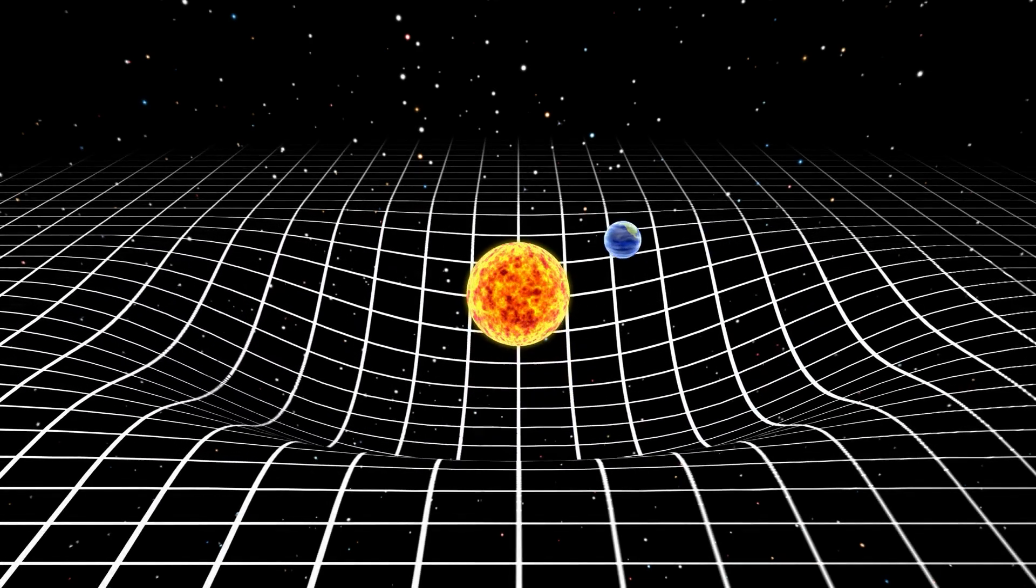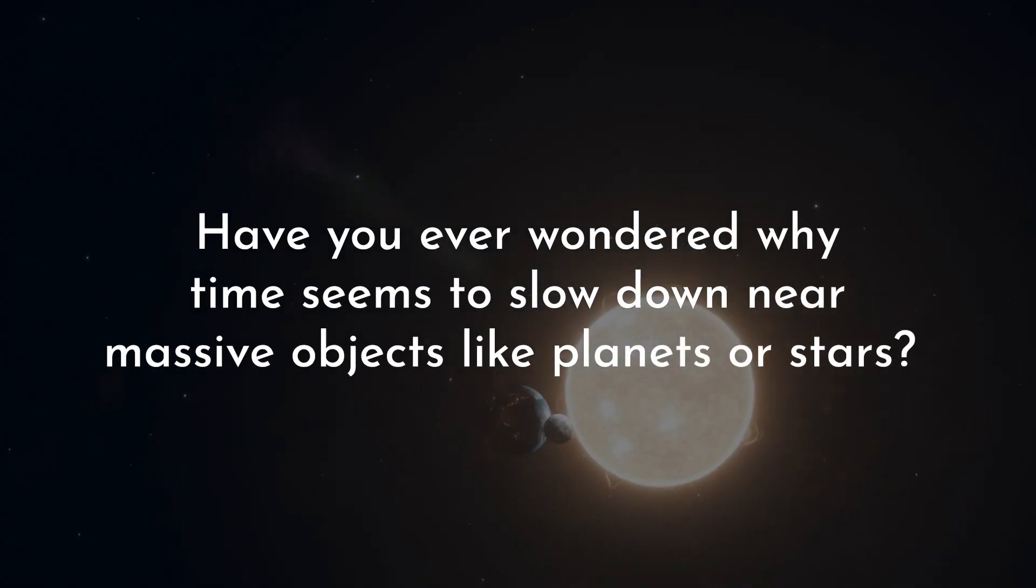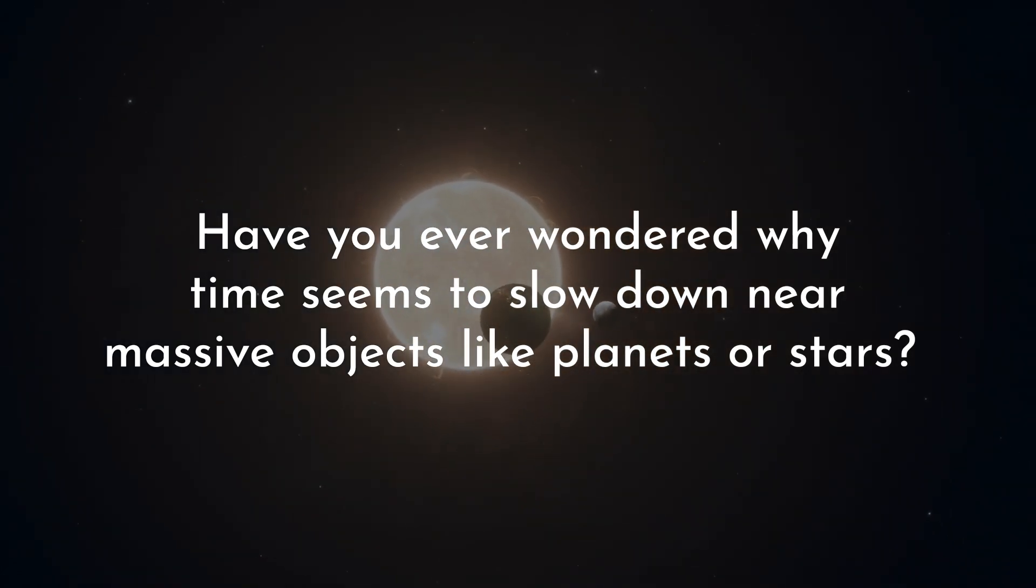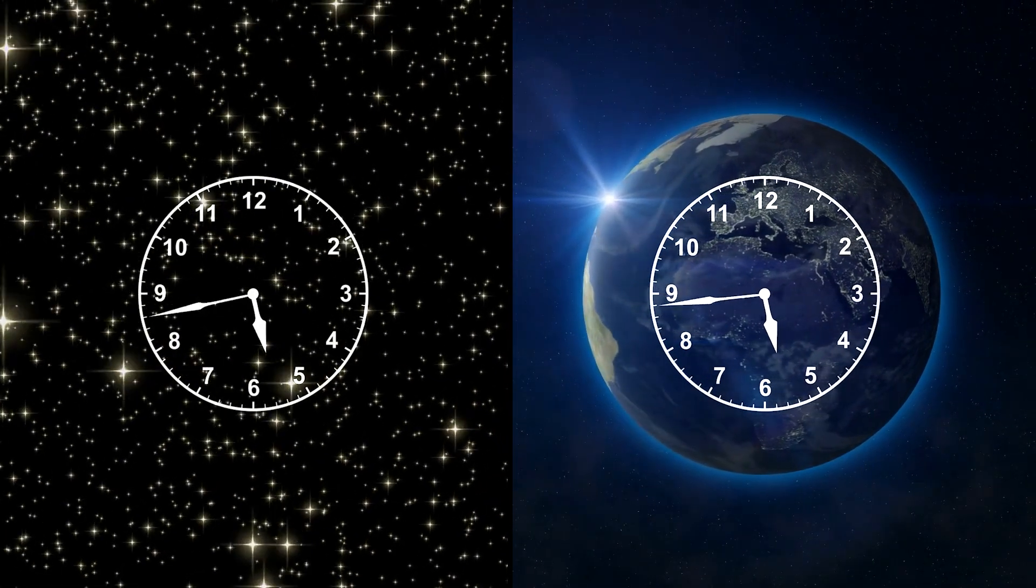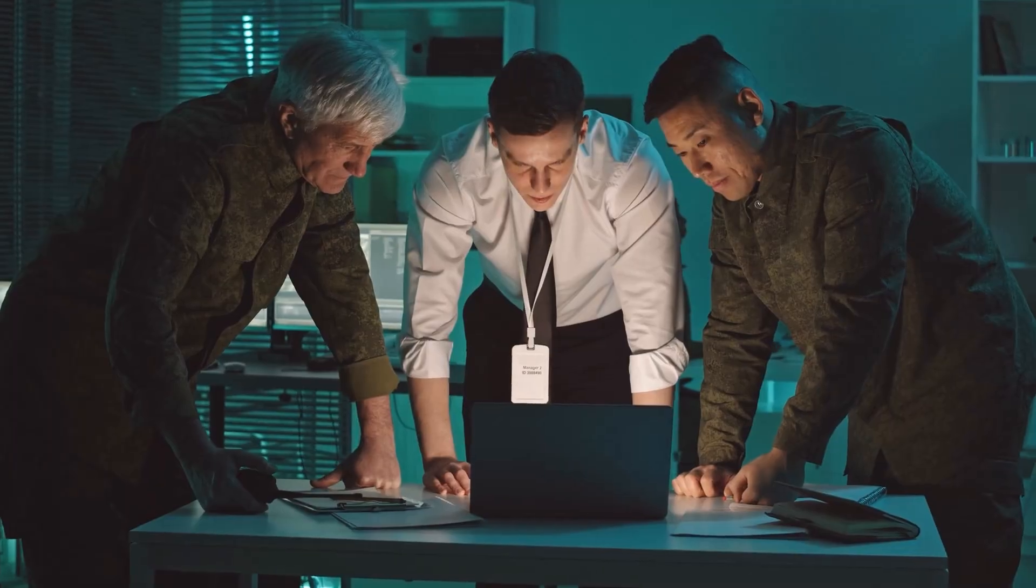Have you ever wondered why time seems to slow down near massive objects like planets or stars? Let's explain it with two clocks, one on Earth and another in space. Surprisingly, the Earth clock ticks slower. This isn't fantasy, it's a real effect proven by experiments.